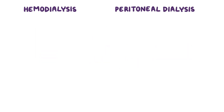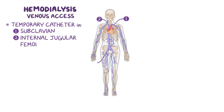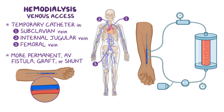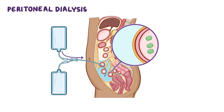The two types of dialysis are hemodialysis and peritoneal dialysis. Hemodialysis requires venous access with a temporary catheter in the subclavian, internal jugular, or femoral vein, or for more permanent access, an AV fistula, graft, or shunt. During hemodialysis, one tubule takes the client's blood through the dialyzer and another returns the filtered blood to the client. Peritoneal dialysis uses a catheter inserted in the peritoneal cavity to deliver dialysate into the abdominal cavity where it dwells for the prescribed time, during which toxins and excess fluid are filtered through the peritoneal membrane and later drained through the catheter.